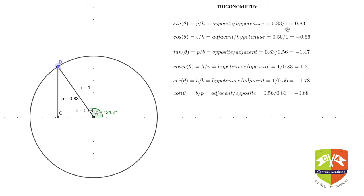Similarly, cos θ will be B by H. In this case, B is negative. Though it is shown here as 0.56 because the absolute value of that side AC is 0.56, since it is in the negative direction, hence it is minus 0.56.